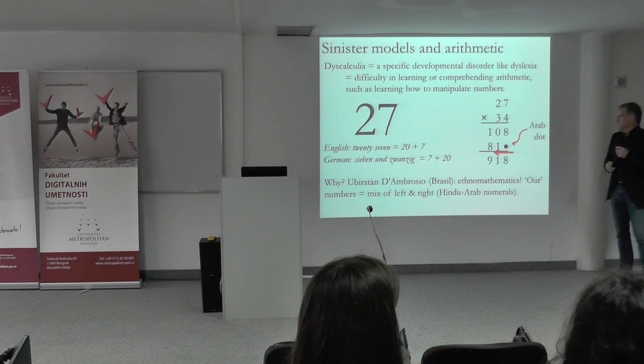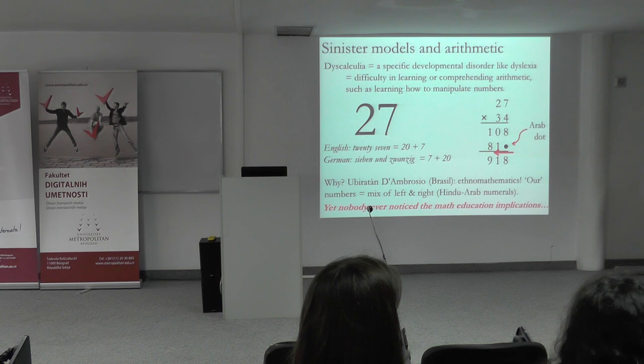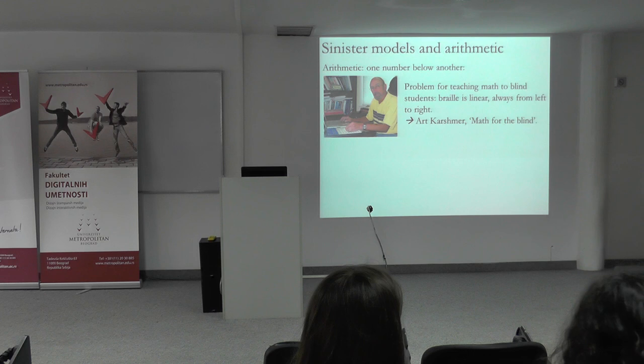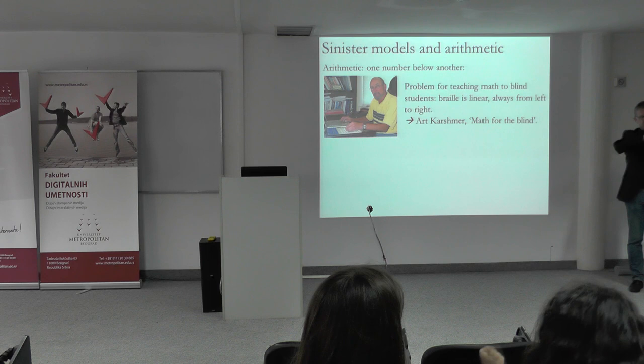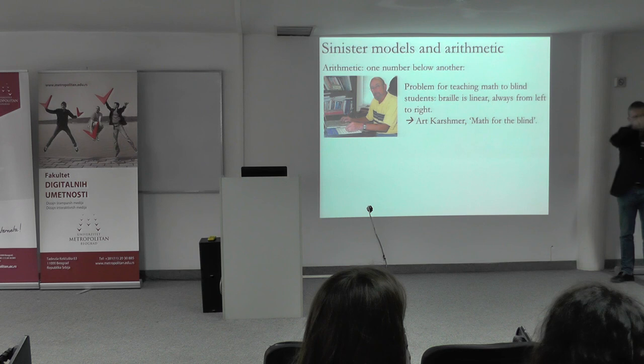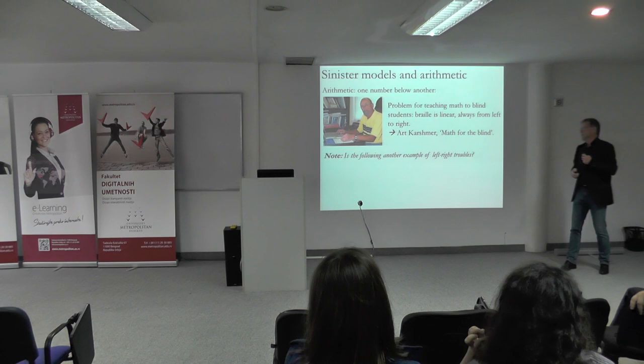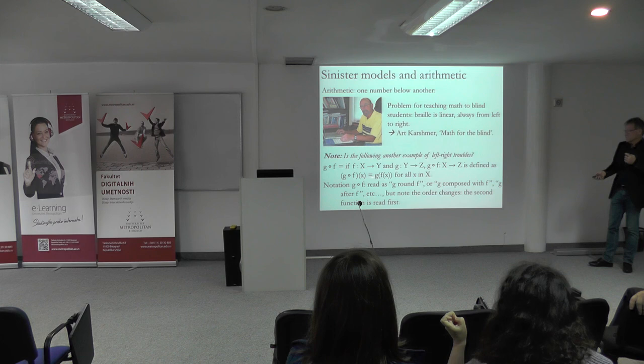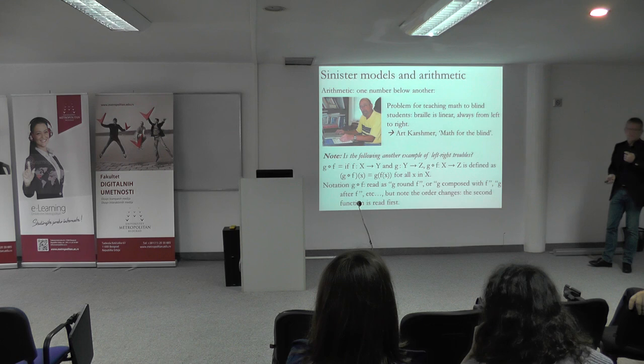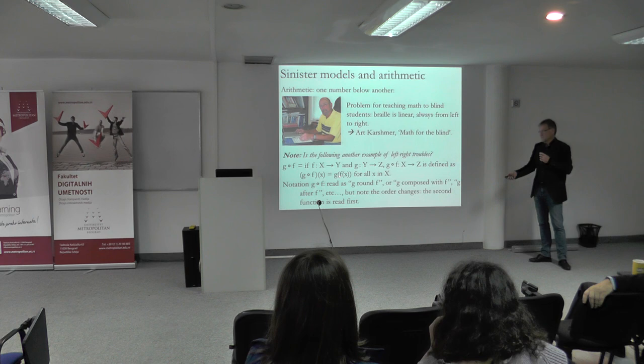The importance of this in mathematics education — I have almost never seen it addressed, except with Professor Art Kashmir, who teaches mathematics for the blind. In Braille, for instance, it is very linear — they always read from left to right on one line. So they cannot do long divisions, cannot do multiplications one under the other. This is a problem in mathematics for the blind. Maybe you can try to find other problems like the composition of functions: you have G after F, but you have to teach students that it's the opposite — the second comes first and the first comes second.